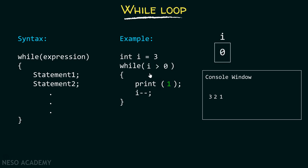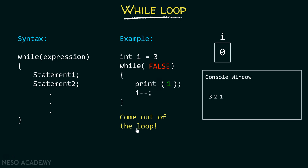Now we check the condition again: is 0 greater than 0? No — 0 is not greater than 0, so it results in a false value. If the condition returns false, then we exit the loop. So the final output is 3, 2, and 1.